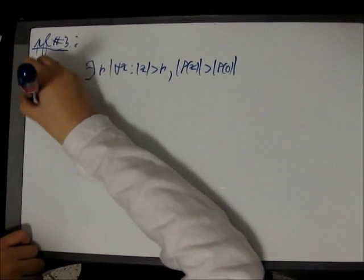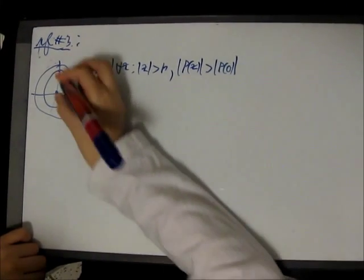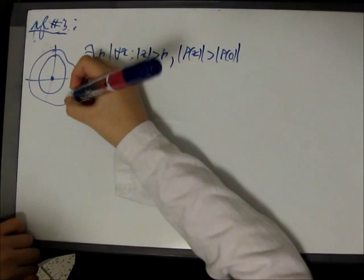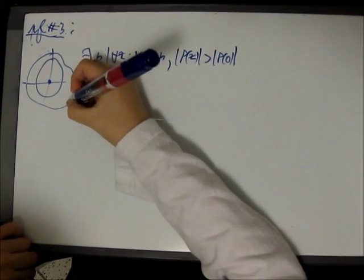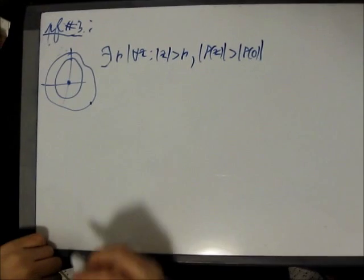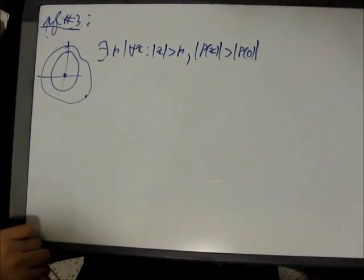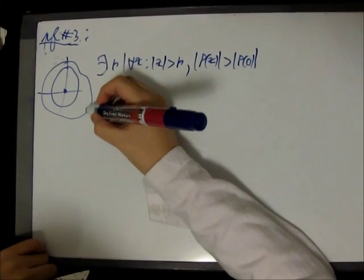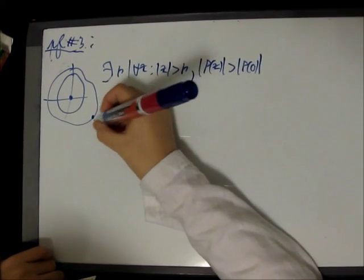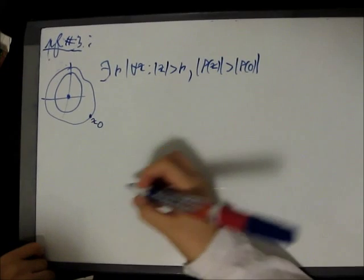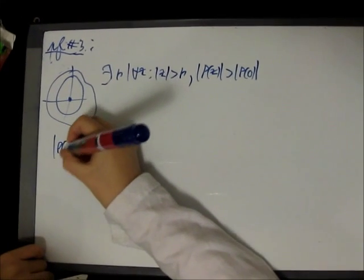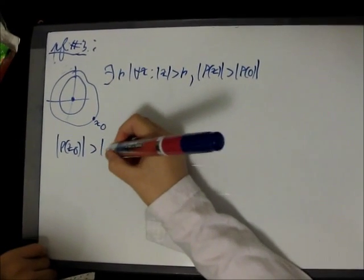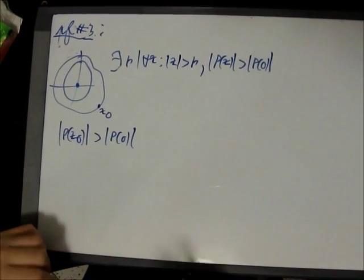Now, if you consider a contour that contains this ball and the minimum modulus principle, we know that the minimum is attained at the boundary of the big contour. But, this is a contradiction since the modulus of P of Z is greater than the modulus of P of 0.